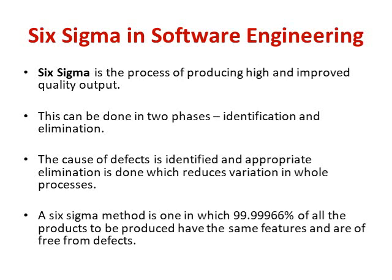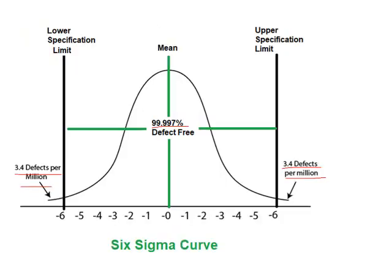A Six Sigma method is one in which 99.99% of all products to be produced have the same features and are free from defects. This is illustrated in the control chart diagram of the Six Sigma curve, where the defect-free product lives in the 99.99% region within the process quality limits.